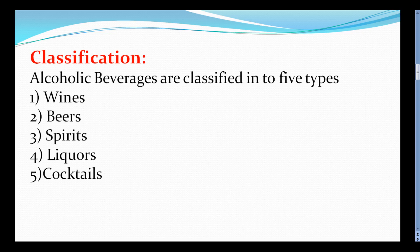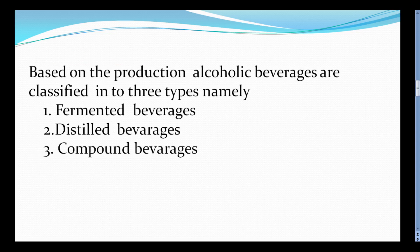The five types are: wines, beers, spirits, liquors, and cocktails. Based on the production, alcoholic beverages are classified into three types: fermented beverages, distilled beverages, and compound beverages.